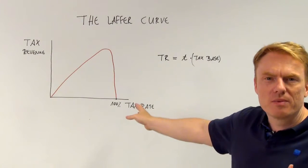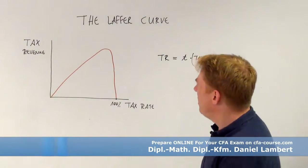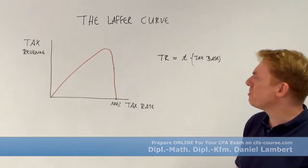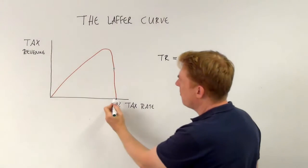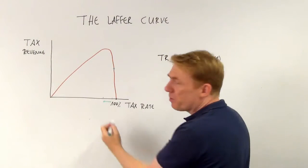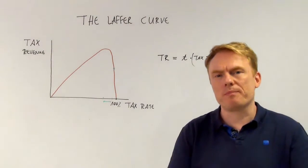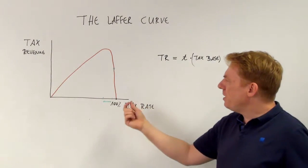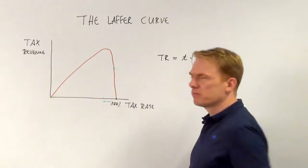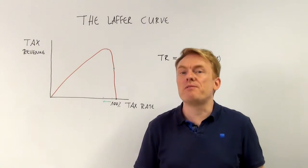With Reaganomics, tax rates were cut because if we are here on this point, we would like to, of course, increase tax revenue because the government wants to have more money. So if we increased the tax rate, would it be possible to have an increase in tax revenue?